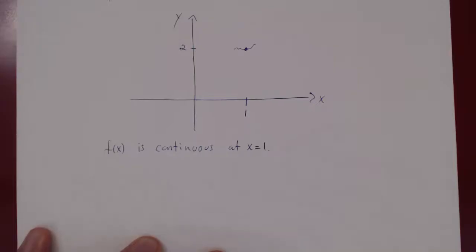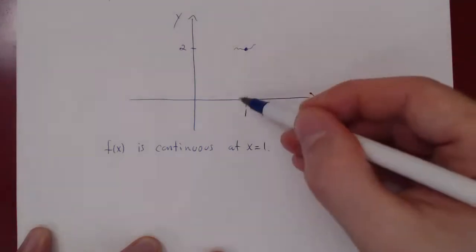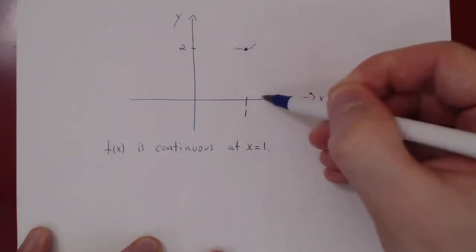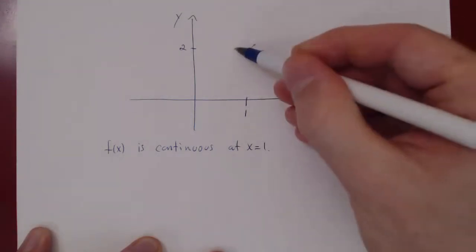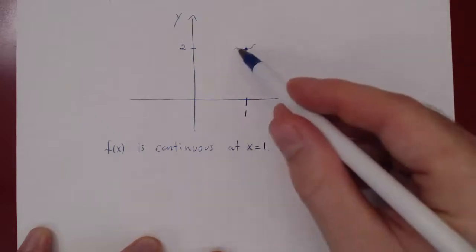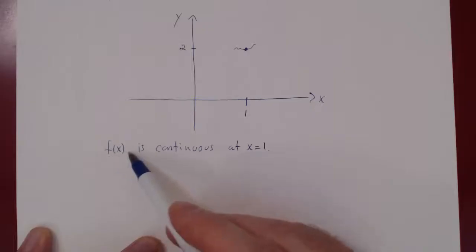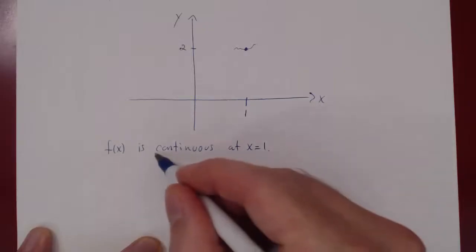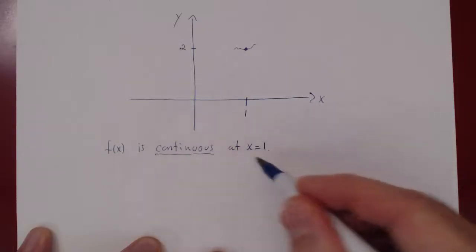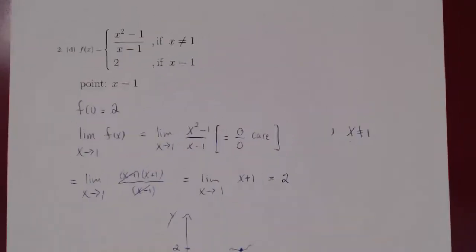Continuity is simply a fancy word for no break. There is no break in the function. The function is defined, and as x approaches 1 from the left or from the right, the y-value approaches 2 as well. There is no break in the function — everything is nice — so we say f(x) is continuous at x equals 1. That's problem 2D.